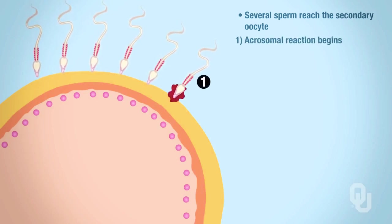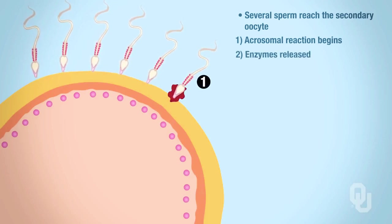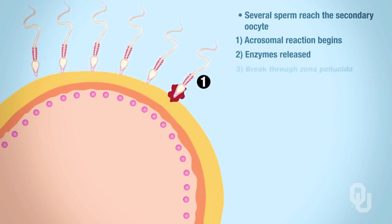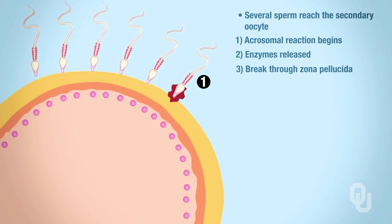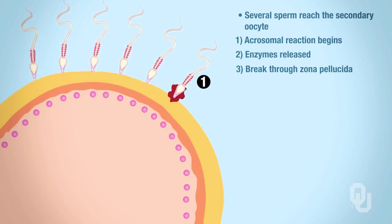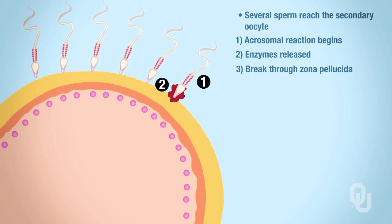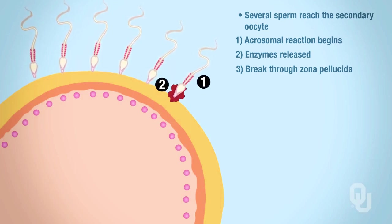The acrosomal reaction begins where a whole bunch of enzymes get released, and the enzymes start breaking through the zona pellucida. In step two, you can see the enzymes that are being released—that red area is indicating that.